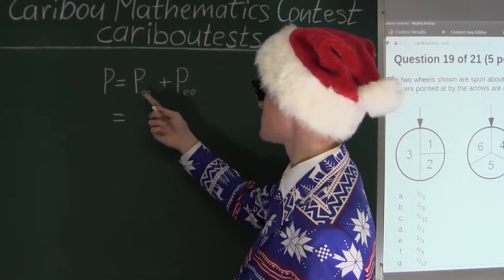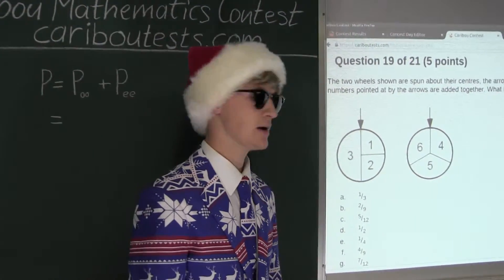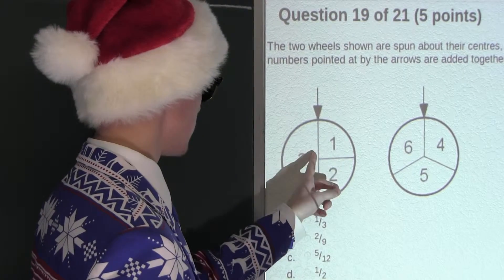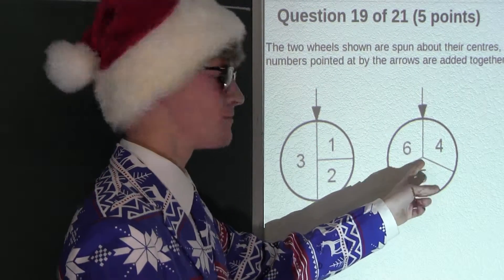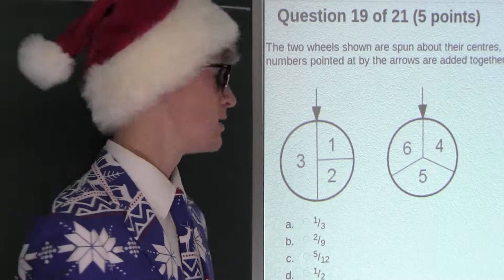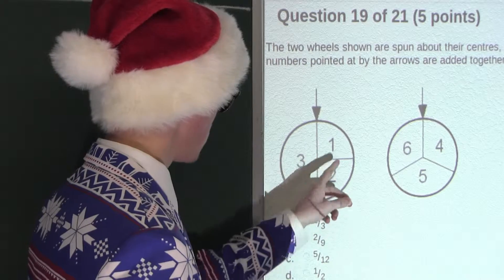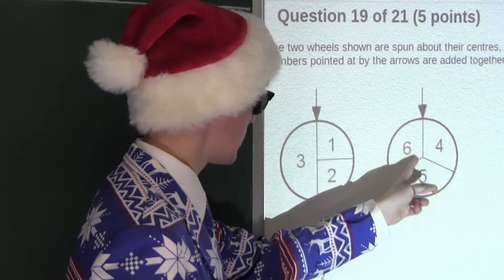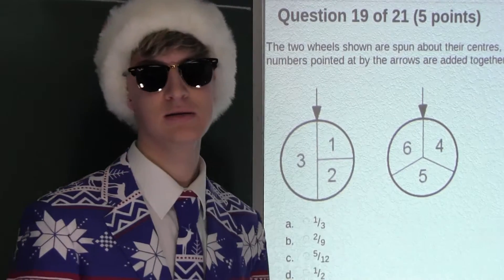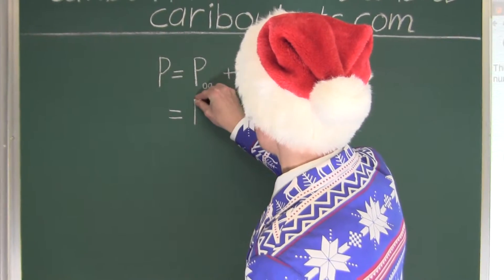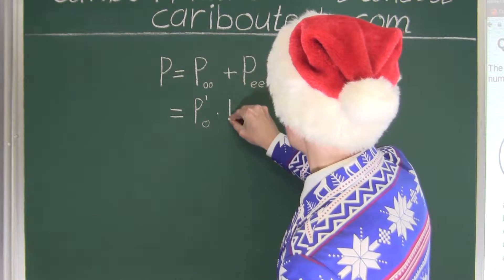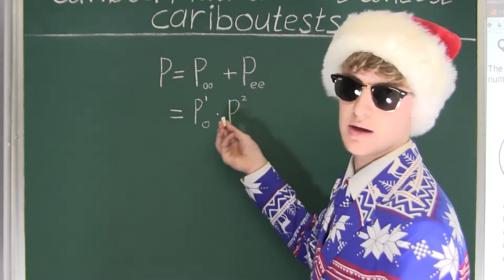Now let's look at the probability of spinning two odd numbers. For that event, we would be spinning one odd number on the first wheel and one odd number on the second wheel. Both spins are independent from each other. So therefore, the probability of spinning an odd number on each wheel translates to the multiplication of both of those individual probabilities — the probability of the first wheel spinning an odd number multiplied by the probability of the second wheel spinning an odd number.